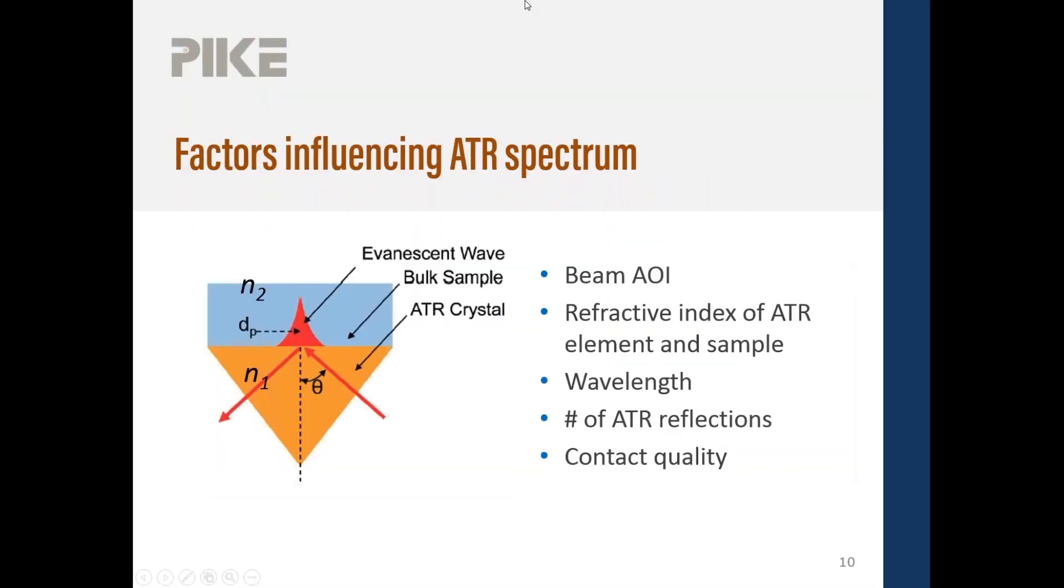So your ATR spectrum is a function of several different parameters. One being the angle of incidence for the accessory, the refractive index of your sample, as well as the ATR element. We're going to see illustrations where it's a function of wavelength, the number of reflections, and most importantly, factors influencing your ATR spectrum is contact quality. ATR requires that you have intimate contact between your sample and the ATR crystal. Without that intimate contact, your spectrum bands may not be as strong.